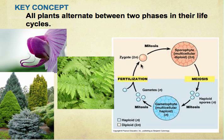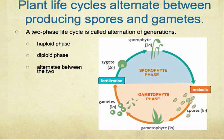From N, it becomes 2N, which is known as a zygote cell. Let's move on to the next slide, which is about how plant life cycles alternate between producing spores and gametes.